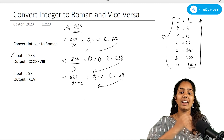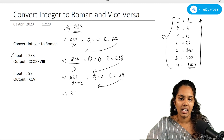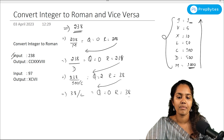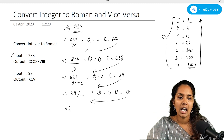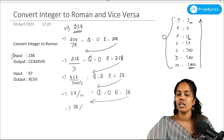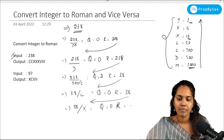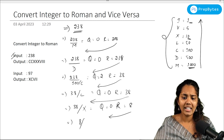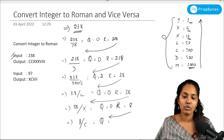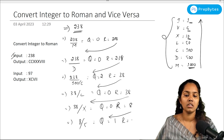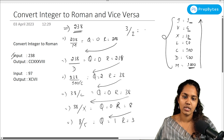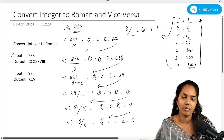Now I'll take that remainder and divide it by L (50), which gives a quotient of 0 and a remainder of 38. Again I'll divide 38 by X (10), which gives a quotient of 3 and a remainder of 8. Then I'll take the 8 and divide it by V (5), giving a quotient of 1 and a remainder of 3. Finally I divide 3 by I (1), giving a quotient of 3 and a remainder of 0.